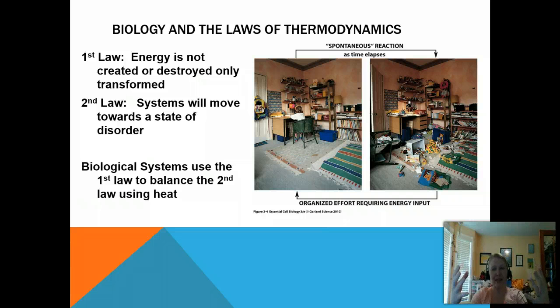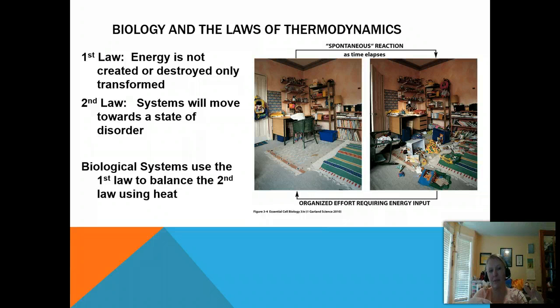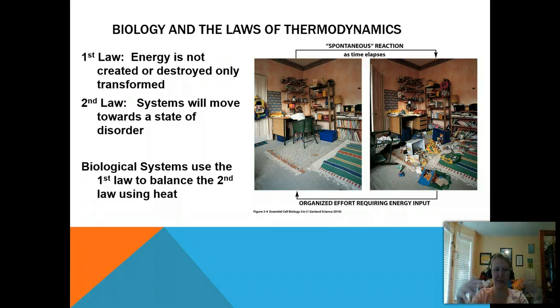Generally, it leaves our system as heat, and it only can come into our system through solar energy. And we'll talk about that when we talk about photosynthesis, and we're going to review that real quick on the next slide. But the second law of thermodynamics that's really important is that systems will move towards a state of disorder or entropy, which is sometimes called chaos. But it's disorder.